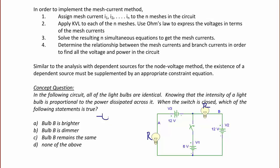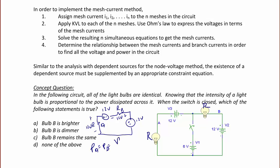First, let's look at when the switch is open. When the switch is open, we have 12 volts and resistor R on the left side, and 12 volts and R on the right side — this is bulb A and this is bulb B. Since we have a loop with a net 24 volts around the loop and two resistors with equivalent value, they both have the same voltage drop across them: 12 volts each. So the power for A equals the power for B, which is V squared over R, or 144 over R.